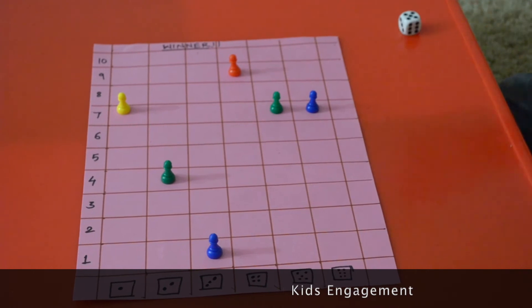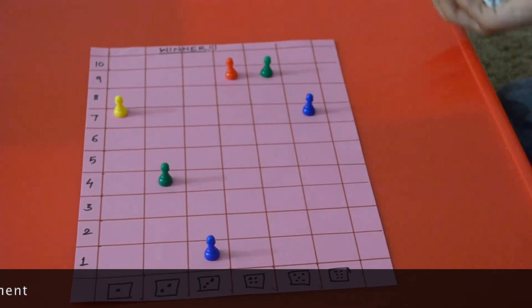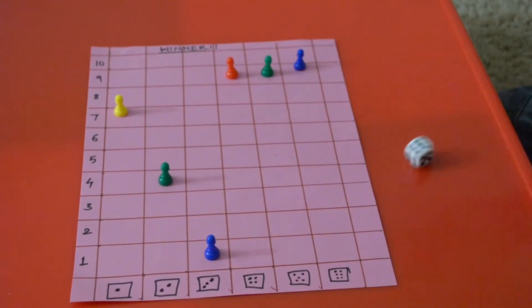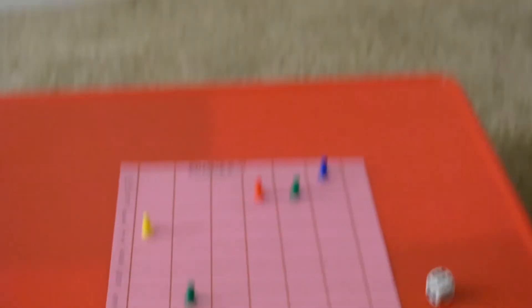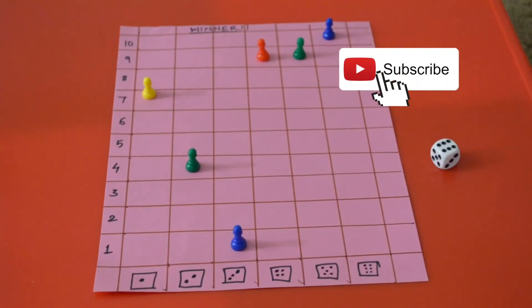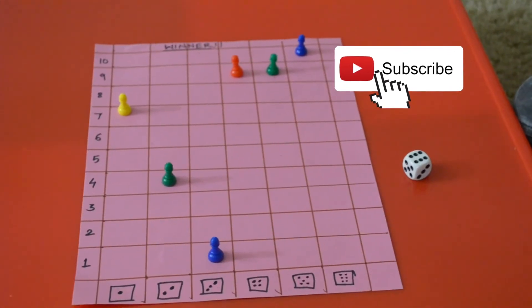It engages your kid for some time as they can also play this game alone by themselves. Who is the winner? Six! See the happiness and smile on your child's face, it's great. So here, the winner of the game is dice number six.